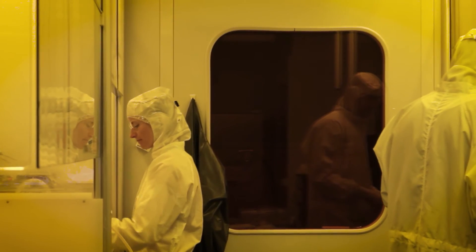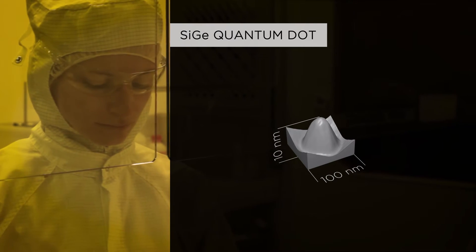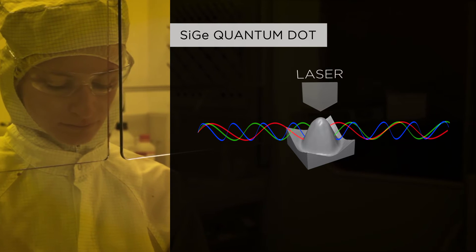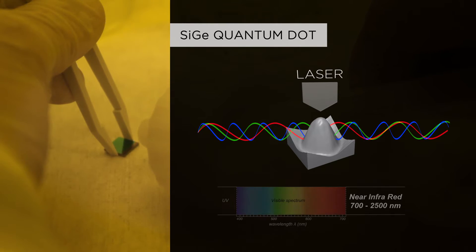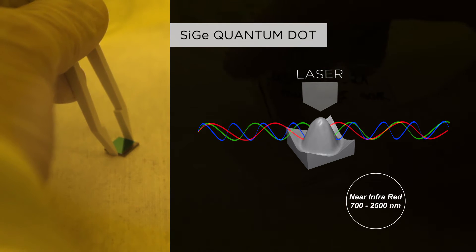A promising approach to overcome this problem is the use of nanoscale silicon germanium quantum dots. Under laser excitation, or electrically pumped, such quantum dots emit light in the near-infrared region of the electromagnetic spectrum. Still, light emission is too weak to be used for optical data processing.